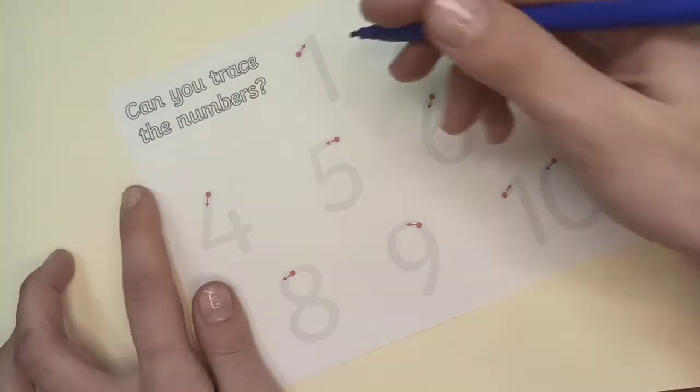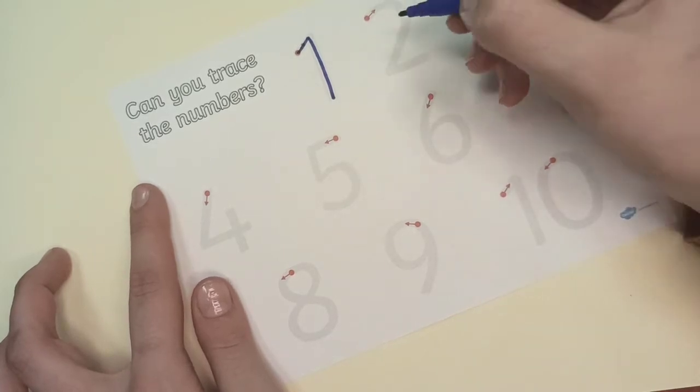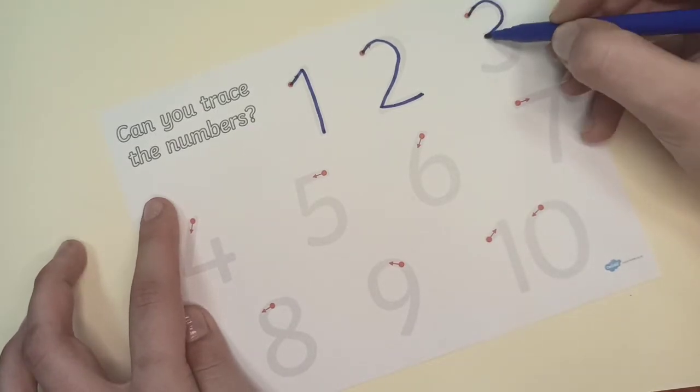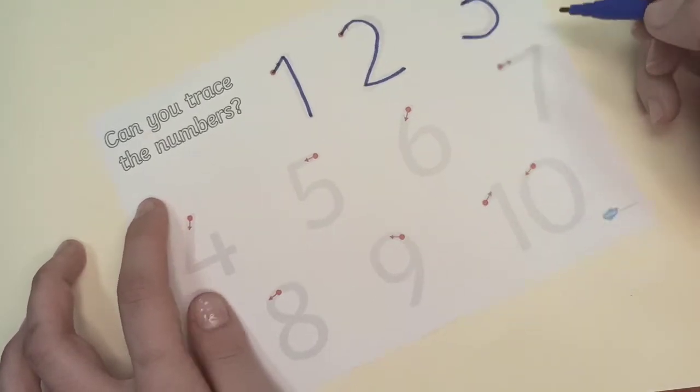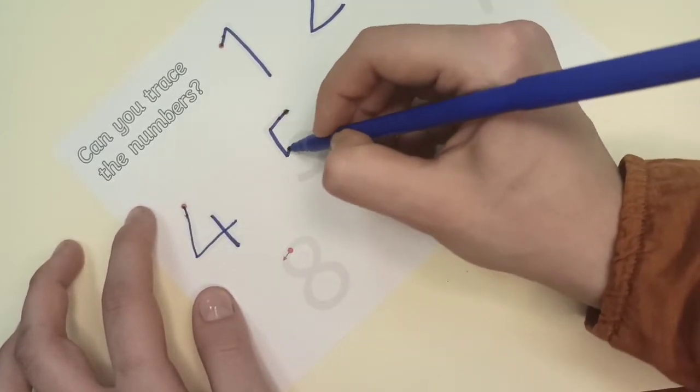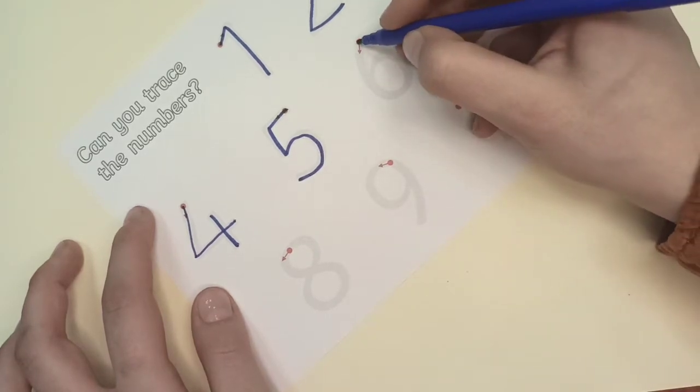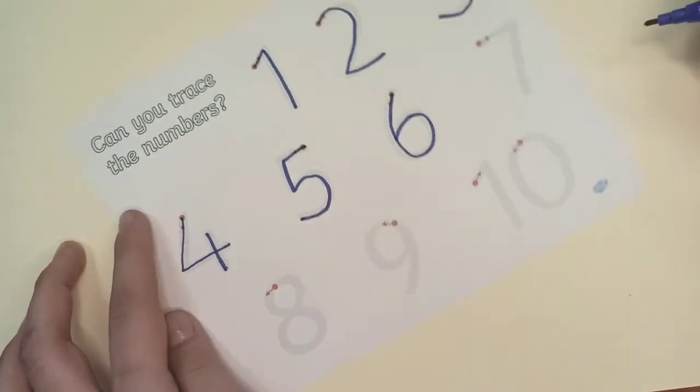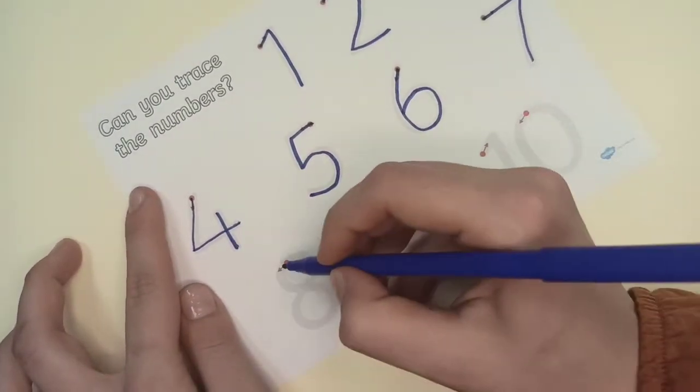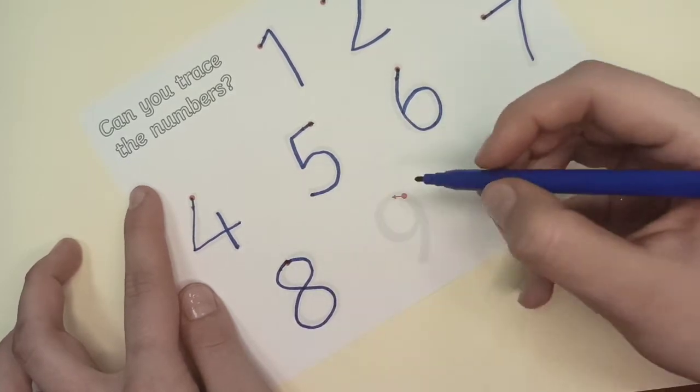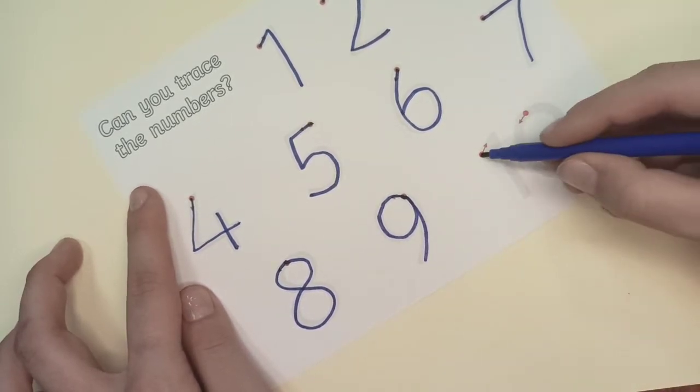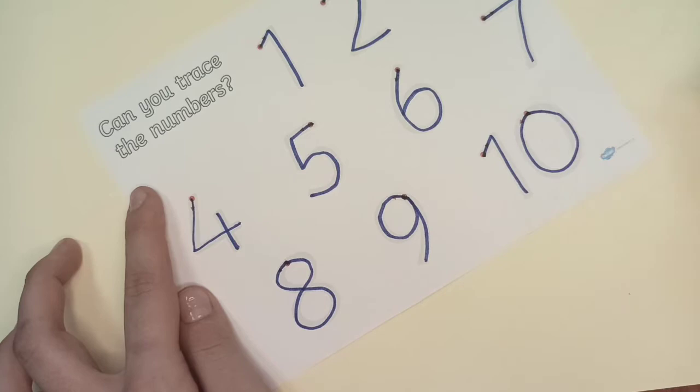We start with the red dot. 1, 1, 2, 3, 4, 5, 6, 7, 8, 9, 10, 10.